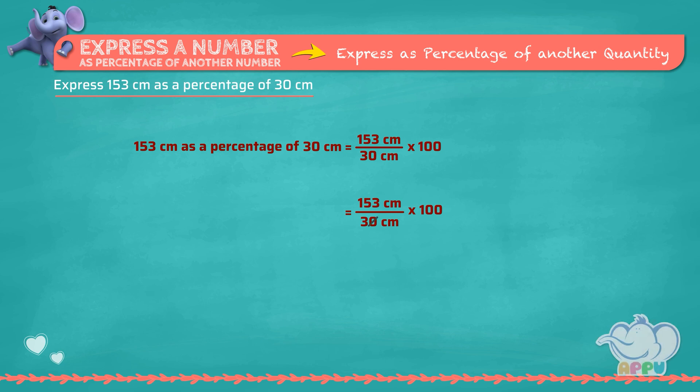Zero gets cancelled. Three divides three once. Three divides 153, 51 times.